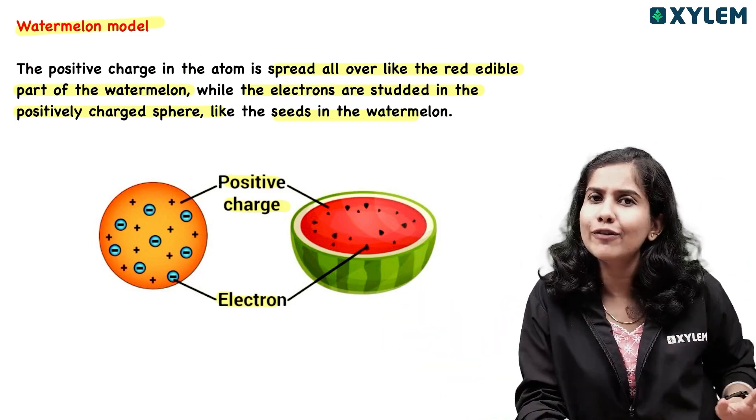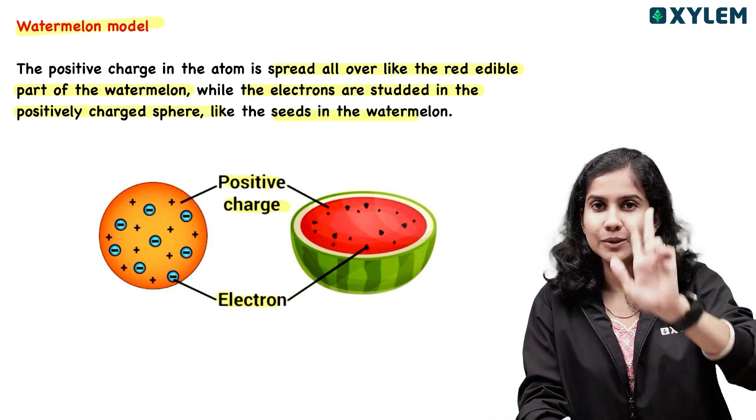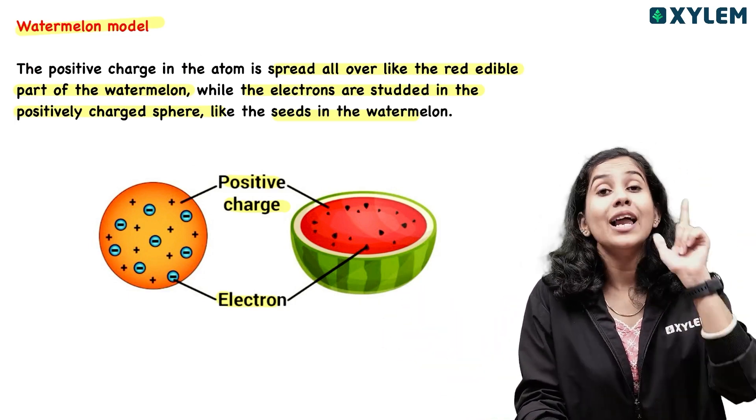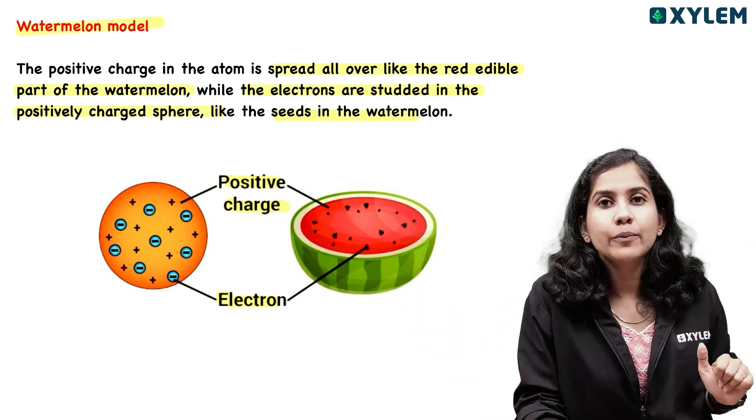What is Thomson's model of atom? It is the Christmas pudding model, the plum pudding model, and the watermelon model — these are the three names for Thomson's atomic model.